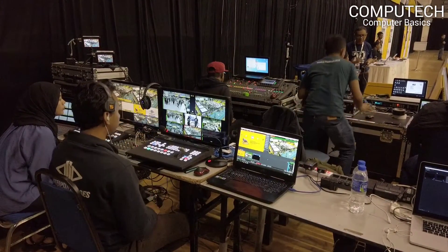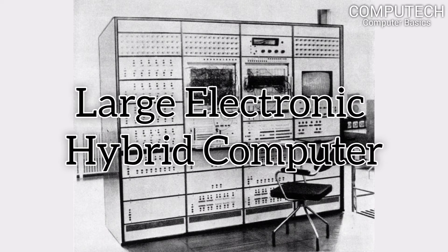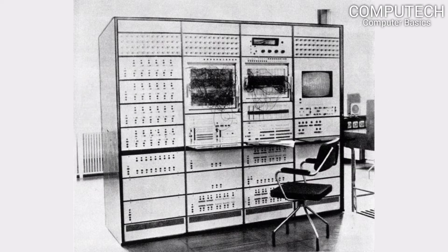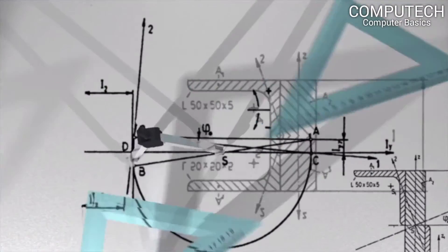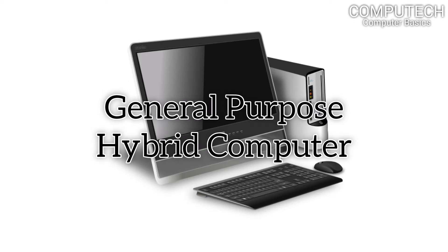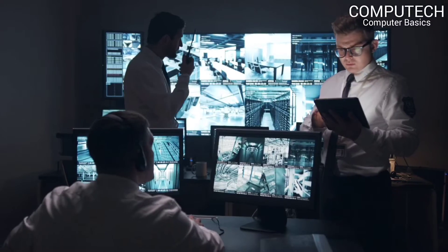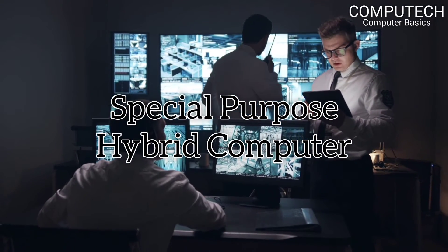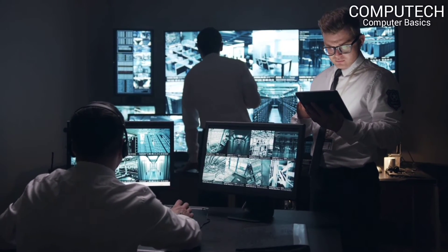There are three types of hybrid computers. The first is large electronic hybrid computers, which are capable of solving complex mathematical equations. The second is general purpose hybrid computers, which help to solve different issues along with performing many tasks simultaneously. The third is special purpose hybrid computers, which are used to solve specific types of problems.